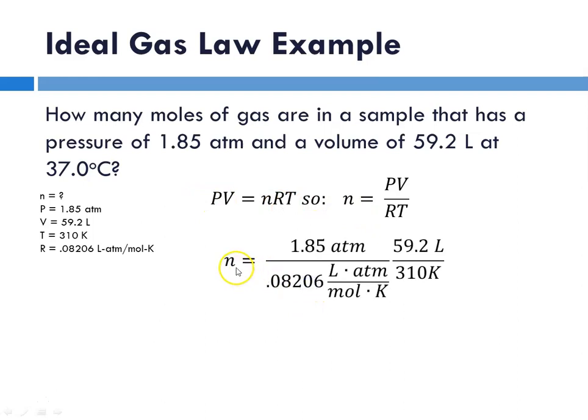Now let's plug in numbers. N is equal to 1.85 atm, our pressure, times 59.2 liters, our volume, divided by 0.08206 liter atmospheres mole Kelvin. It's a funny complex unit, but that is the unit for R. And our temperature is 310 Kelvin.